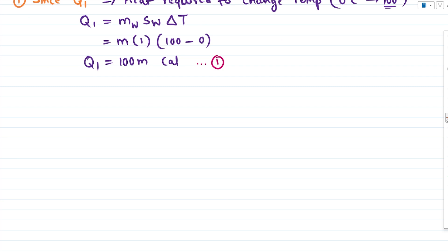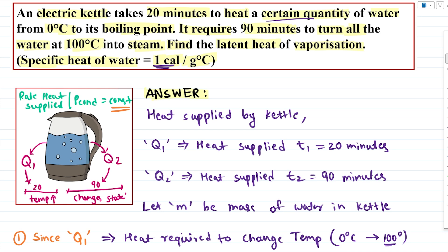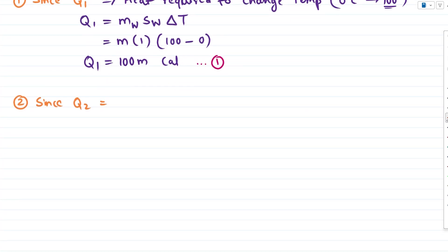Now let's try to figure out Q2. Our second step is to figure out Q2. Since as per the definition Q2 is the heat that was supplied for 90 minutes and the heat supplied in 90 minutes turns all the water into steam. So Q2 is the heat required to change the state of water, going from liquid to steam or gas.